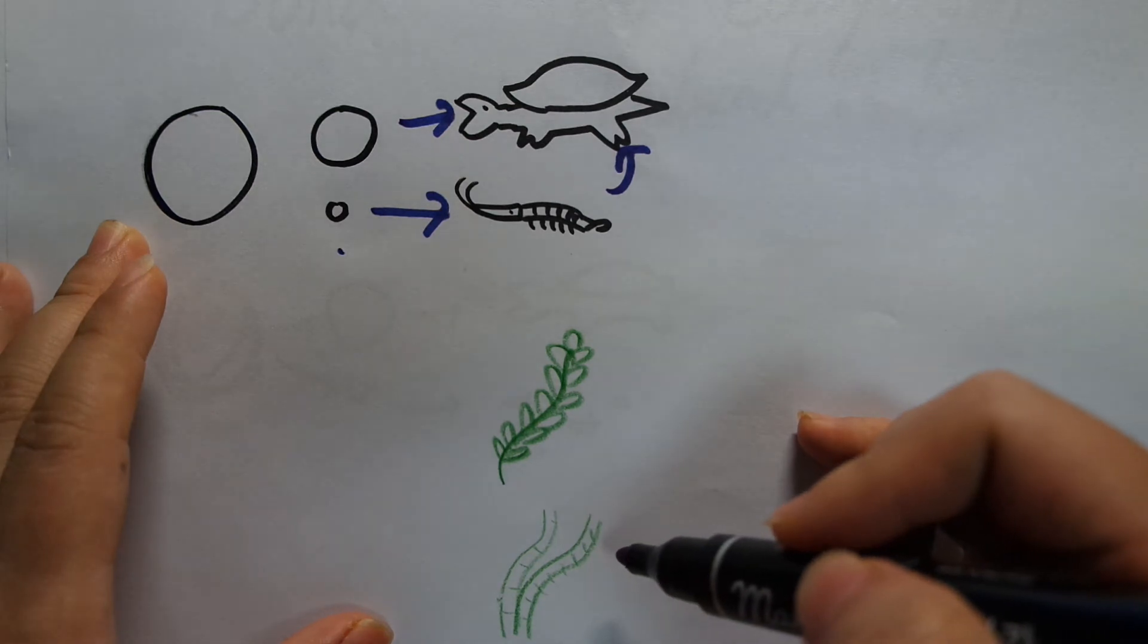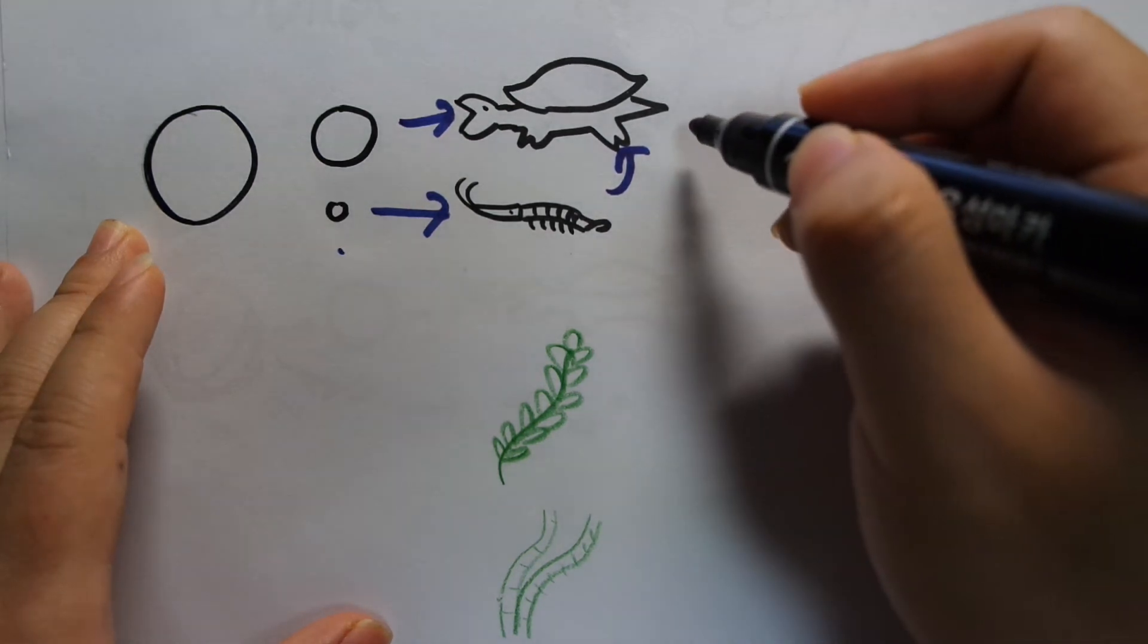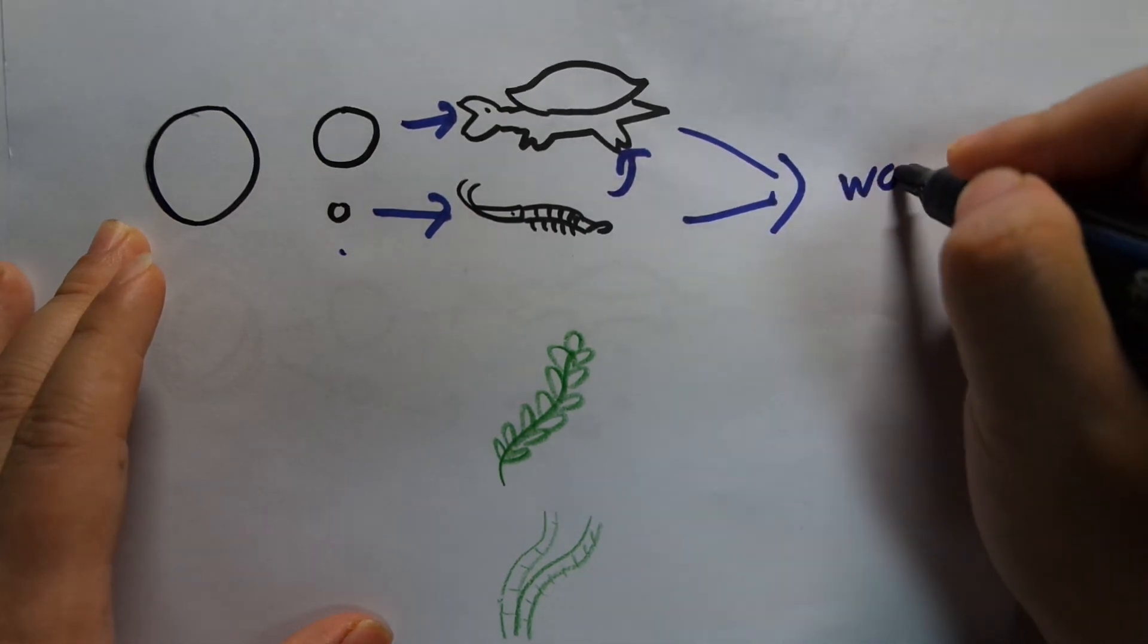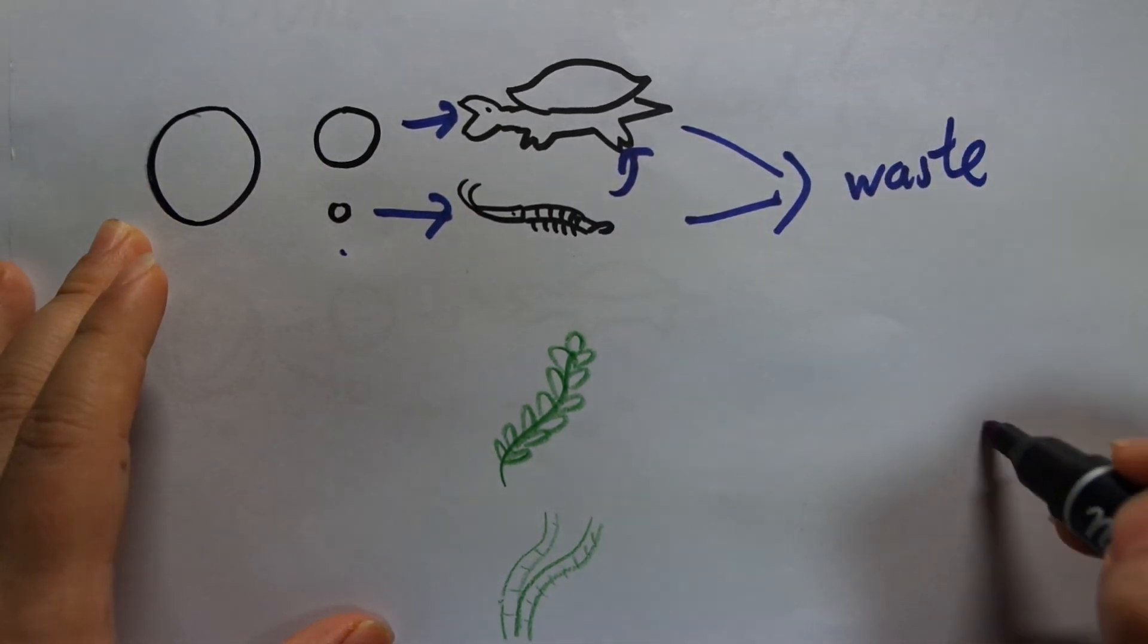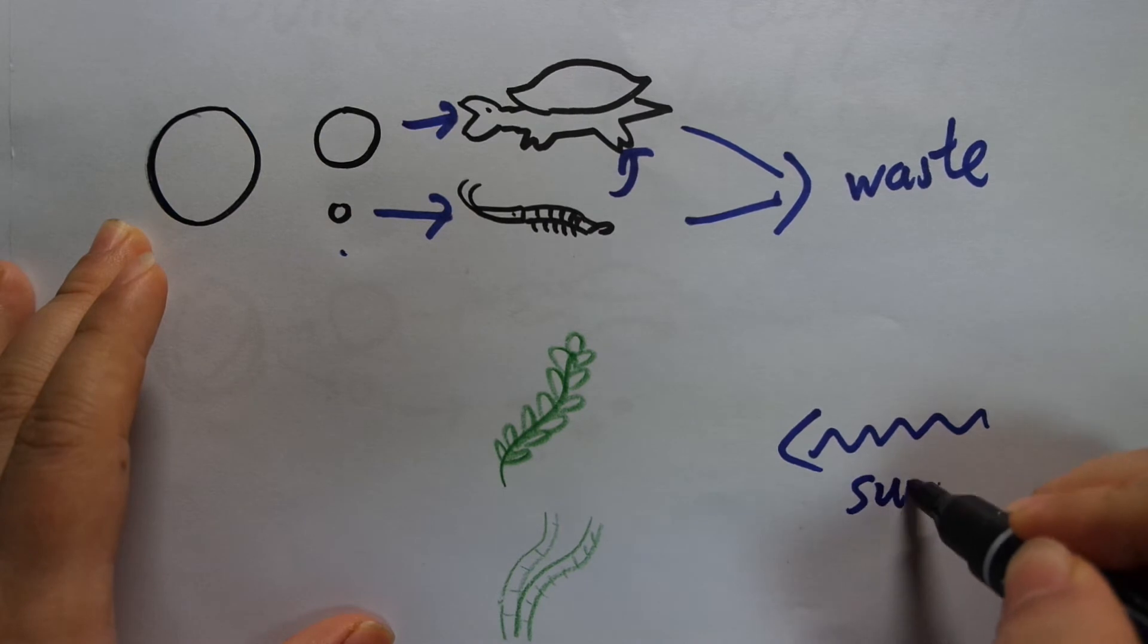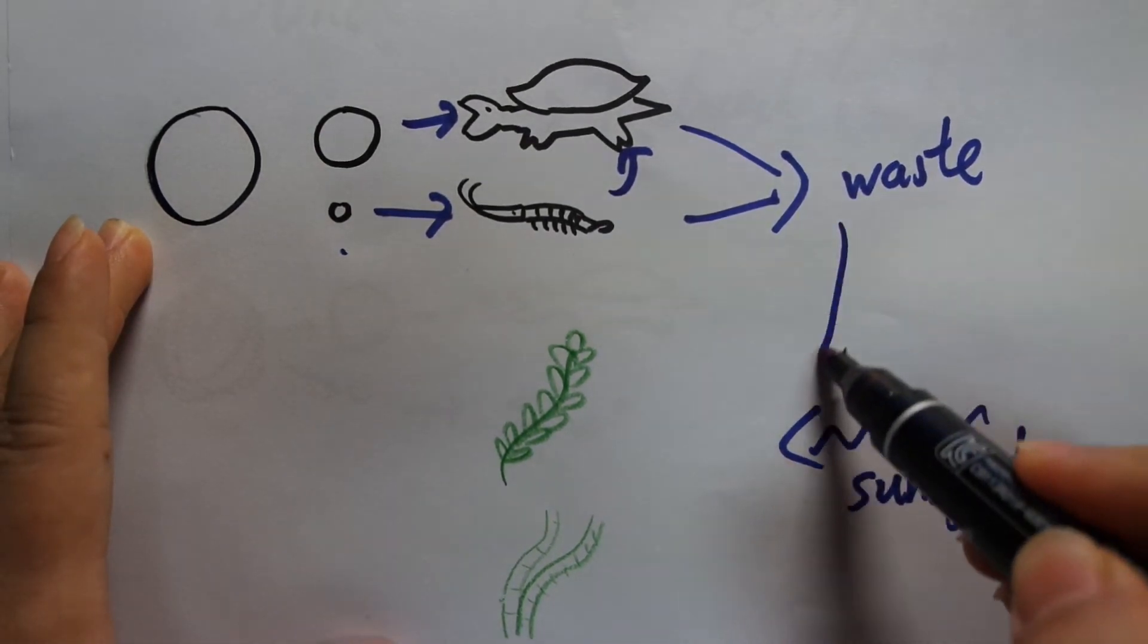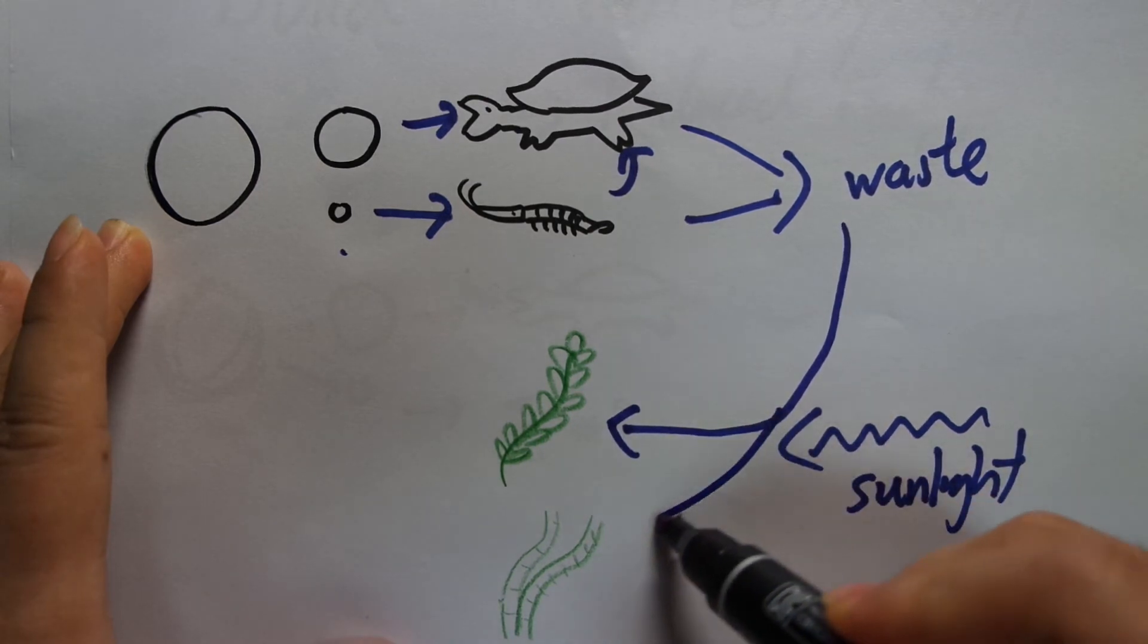What happens to algae? So basically you have sunlight coming in and both of these animals are going to produce waste. And with the energy of sunlight or whatever light source that you have this waste will be converted into plant and algae biomass.